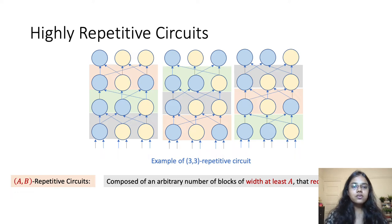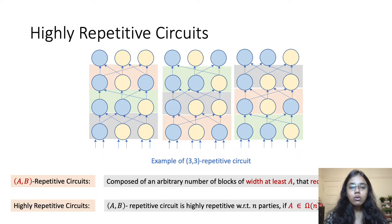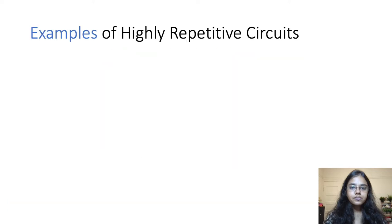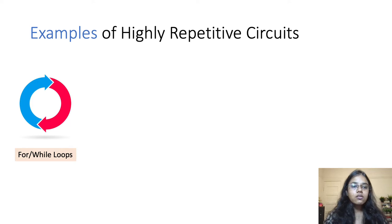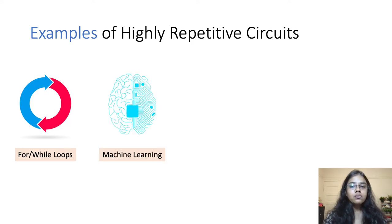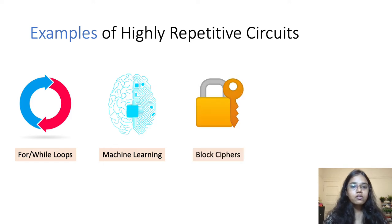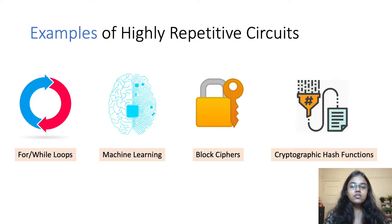We define highly repetitive circuits as AB-repetitive where both A and B are in omega of n, where n is the number of parties. This might appear like just another definition of a subclass of polynomially sized circuits, but as it turns out, this is actually a very interesting class of circuits with many known applications. For instance, for loops and while loops in programming languages are highly repetitive computations. Machine learning algorithms are also highly repetitive. Similarly, block ciphers such as AES and hash functions such as SHA-256 are also iterative in nature and are highly repetitive.